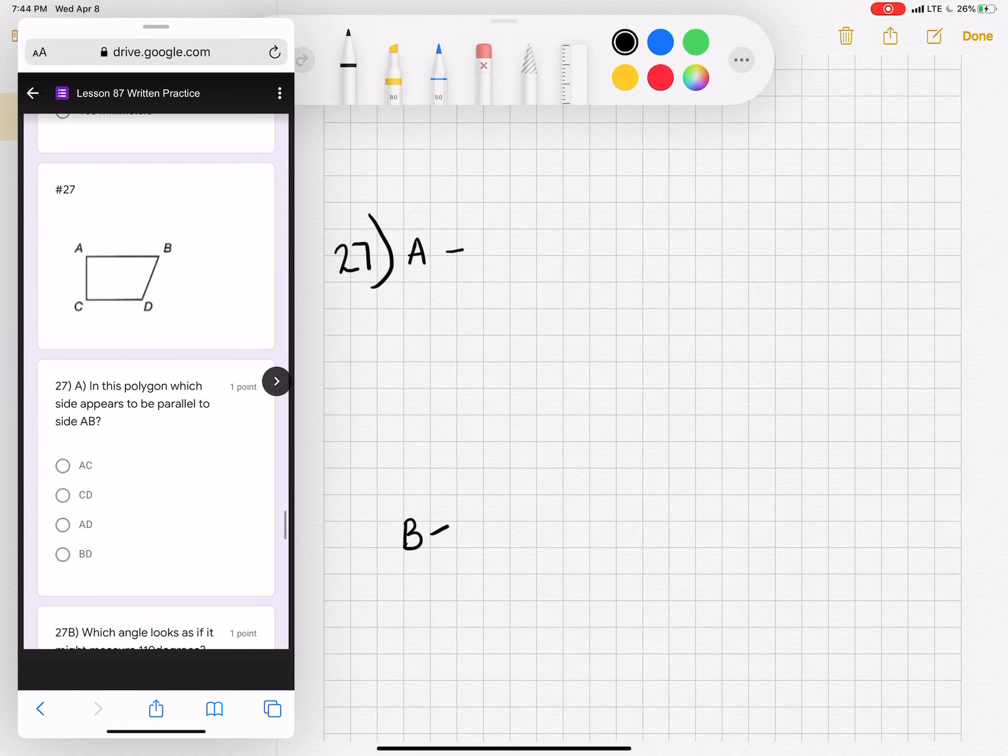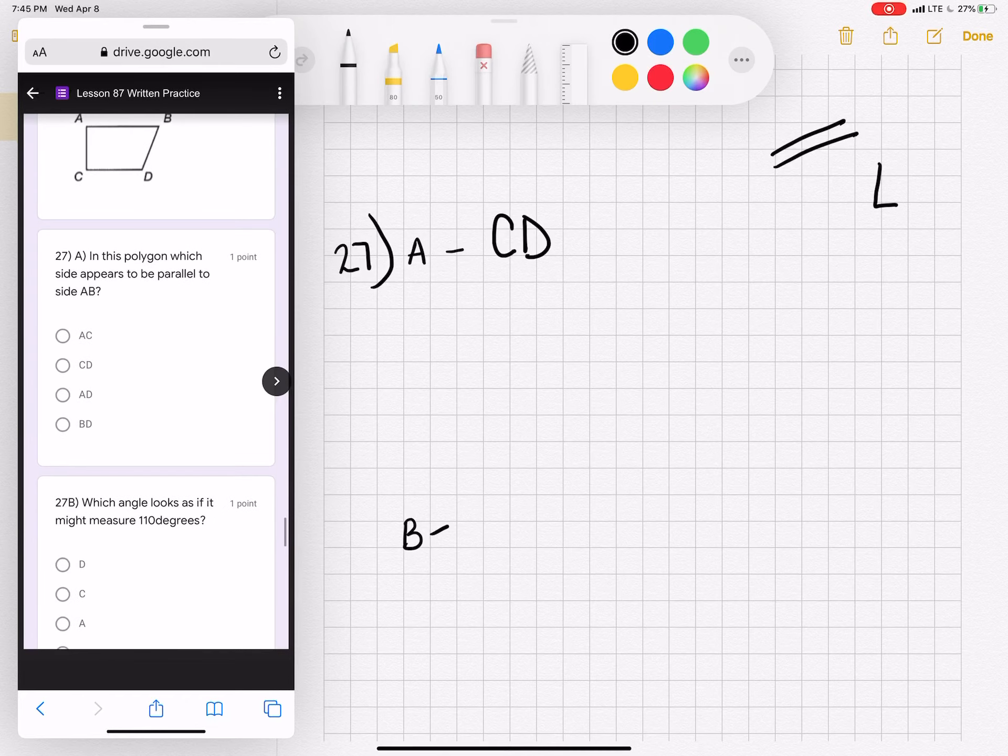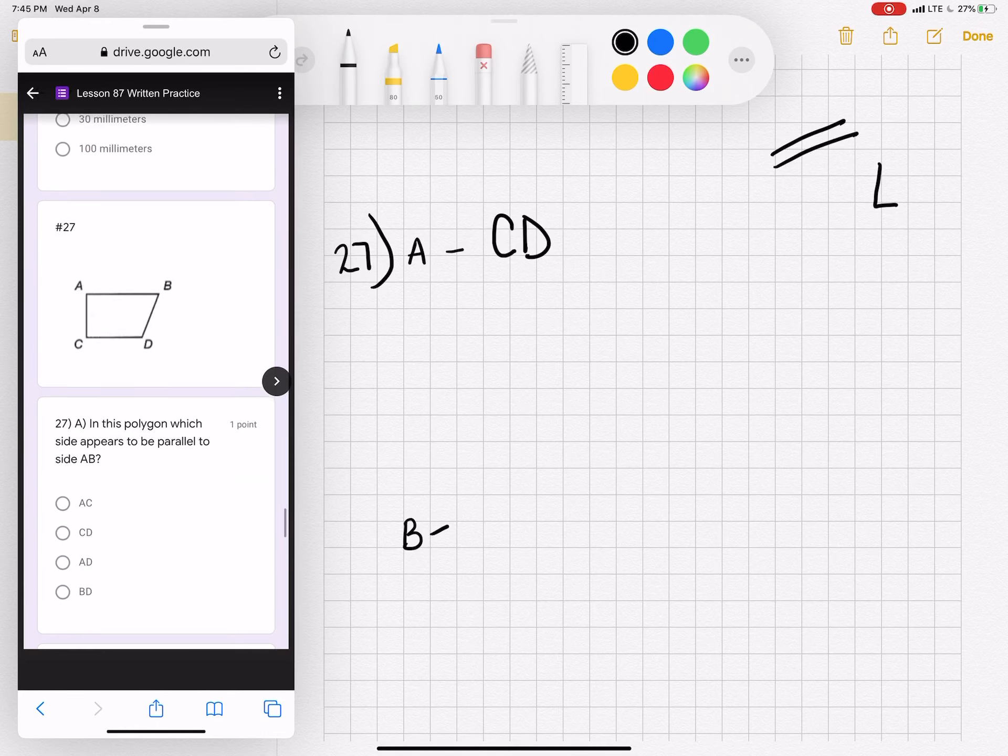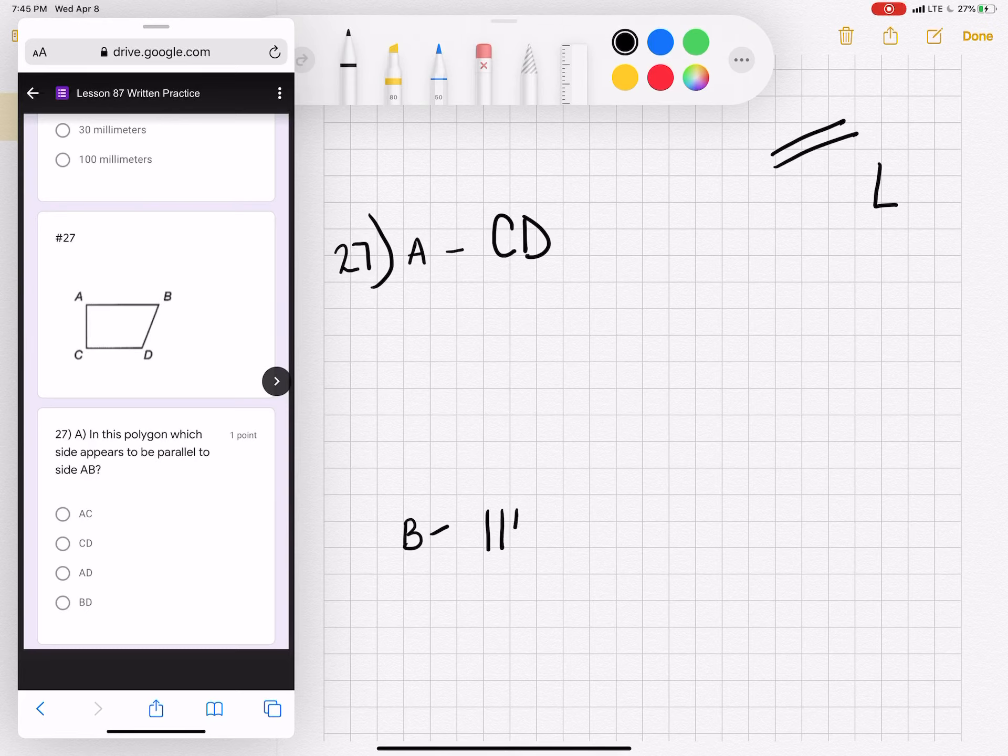27A. We're talking about parallel and perpendicular. Parallel is like train tracks. Perpendicular makes an L. And on part A, it wants to know what is parallel to AB. What is parallel to AB? Well, what's below it going the same direction, CD. Or you could reverse it to say DC. 27B, which angle looks like it might be 110 degrees. 110 degrees is obtuse. There is only one obtuse angle, and that is letter D. The angle D is obtuse.